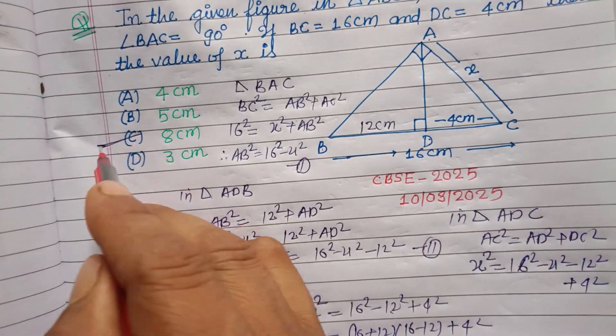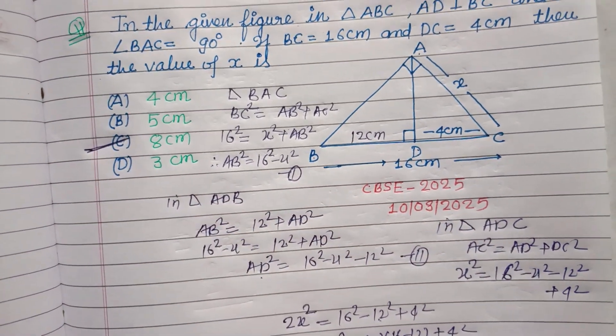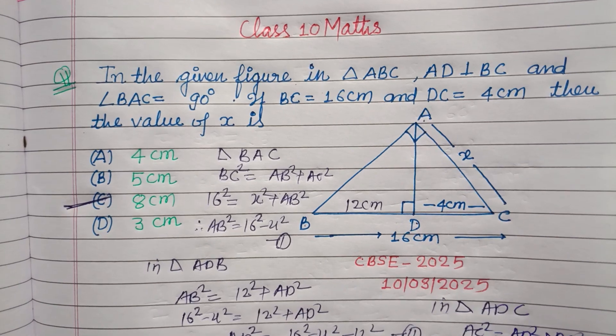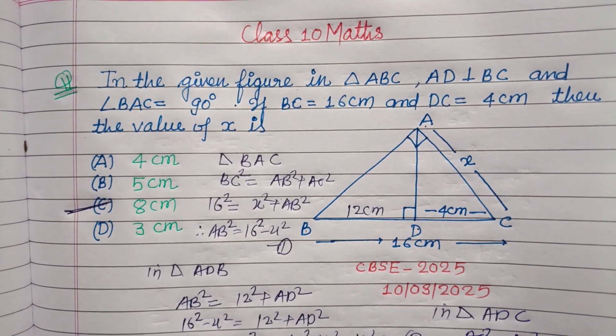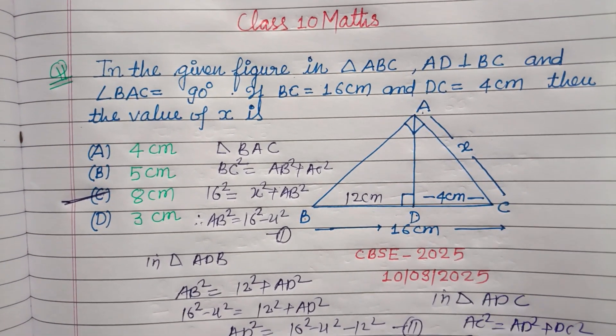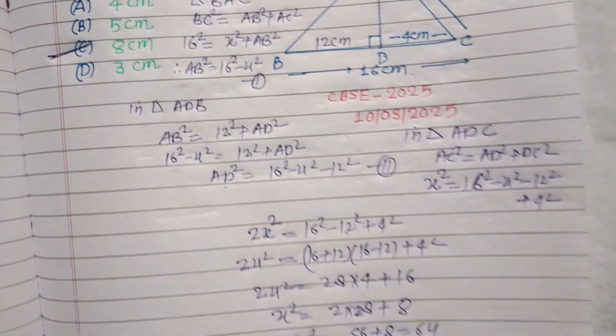The value of X is 8 centimeters, which corresponds to option C. Therefore option C is correct. I hope you got it — please like the video, subscribe to the channel, thanks for watching.